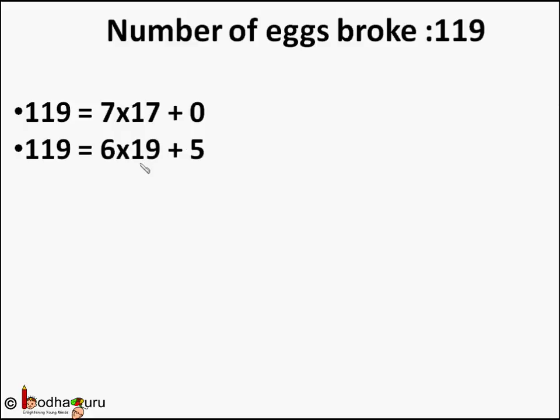119 equals 5 into 23 plus 4 — meaning 119 when divided by 5, 23 is the quotient and remainder is 4.